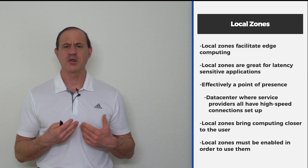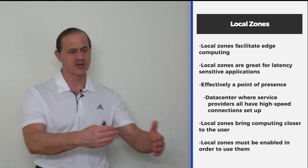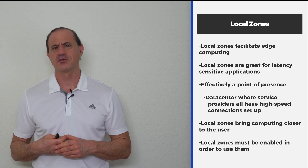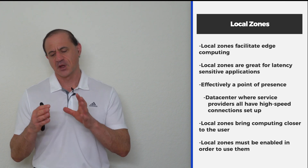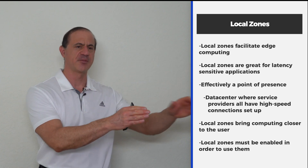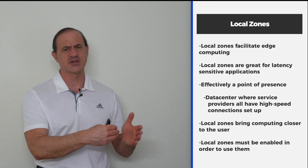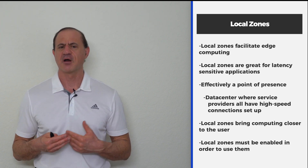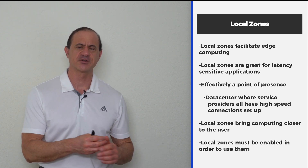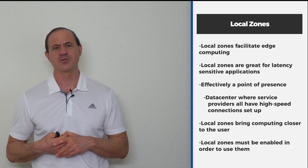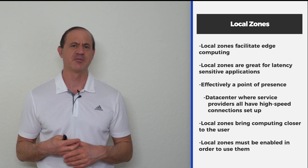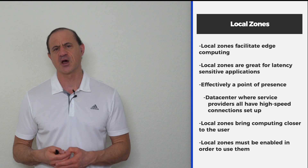Now let's talk about the concept of a local zone. A local zone is really bringing the computing power closer to you, the end user — it's edge computing. Instead of placing your computing power in the AWS availability zone and data center, you may bring it closer to reduce latency. Most applications it won't matter, but if you're dealing with a financial trading application where a nanosecond is a competitive advantage, or other latency sensitive applications where even milliseconds make a difference, then a local zone is a great concept for you.